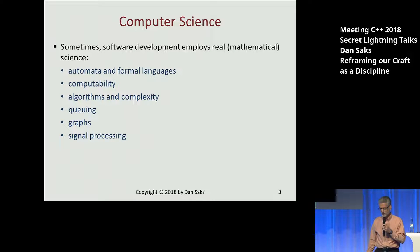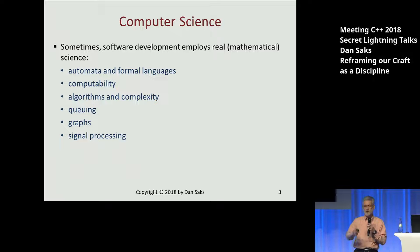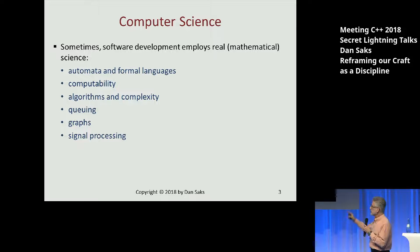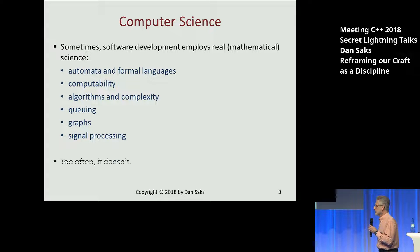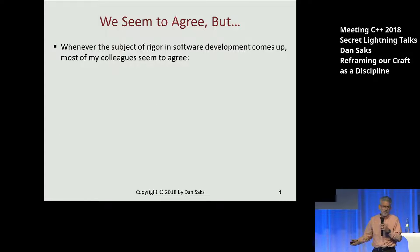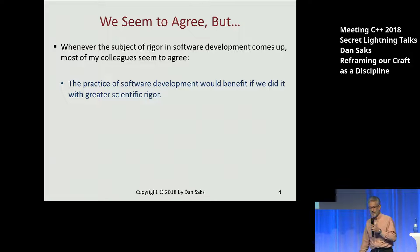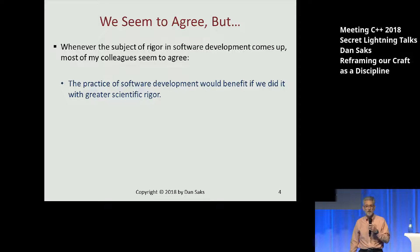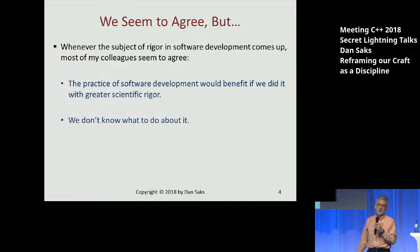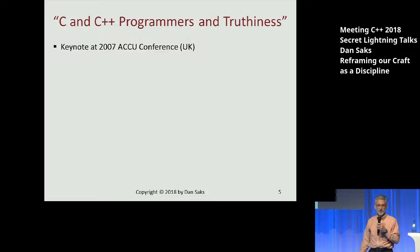What I want to talk about is that sometimes what we do as a craft employs real science — it's mostly mathematical science. Unfortunately, too often it doesn't. Whenever this subject comes up when I'm talking to colleagues, I seem to immediately get agreement on the observation that the practice of software development would benefit if we all practiced it with a little bit more scientific rigor. The problem is we don't know what to do about it. So I'm going to try to make a suggestion.